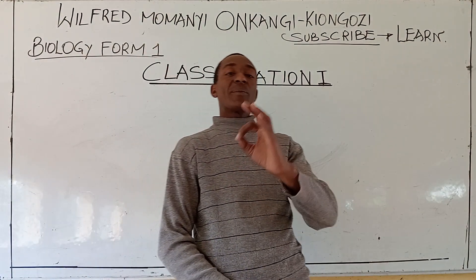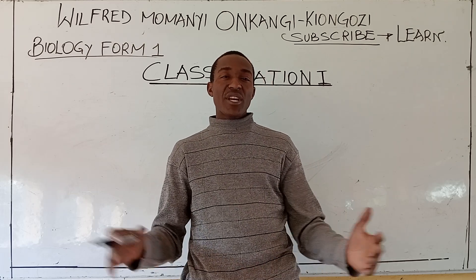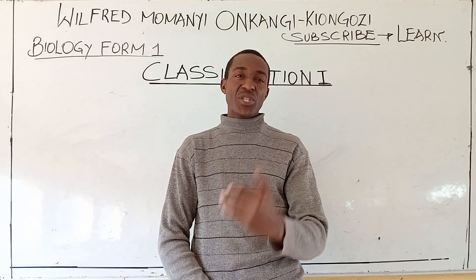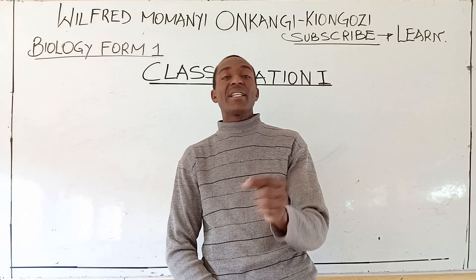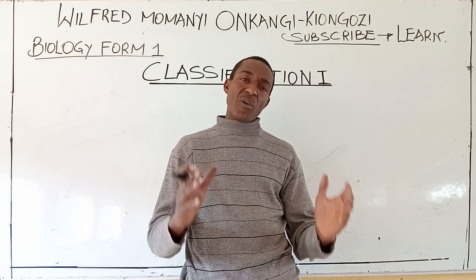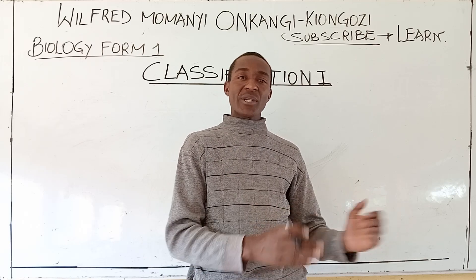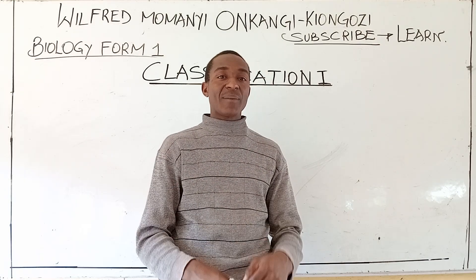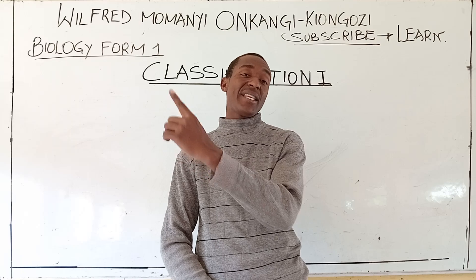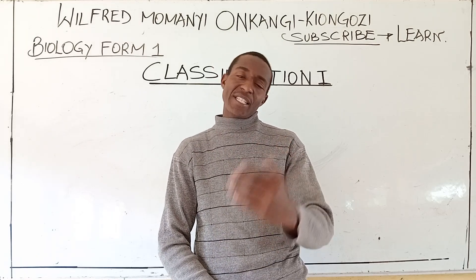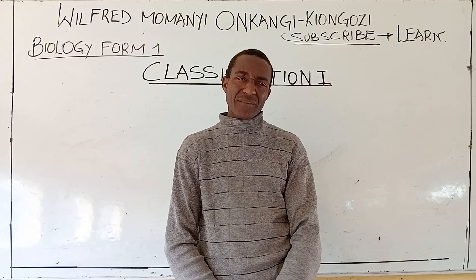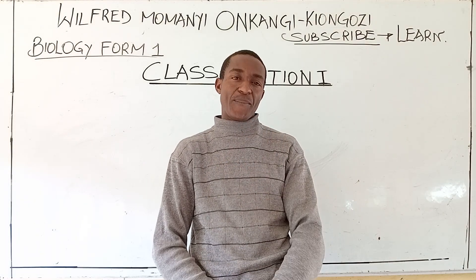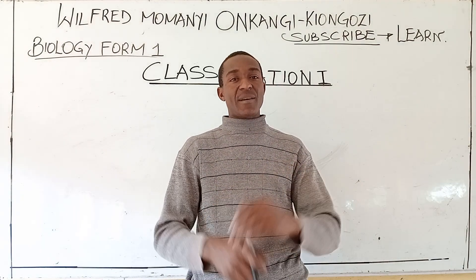We are now in the nature time for one. We have done the introduction to biology and finished. We finished at a point of giving the differences between plants and animals. This chapter is classification 1, and before I move to it and give you the two objectives of our lesson today, I would want us to go through what we did last time.